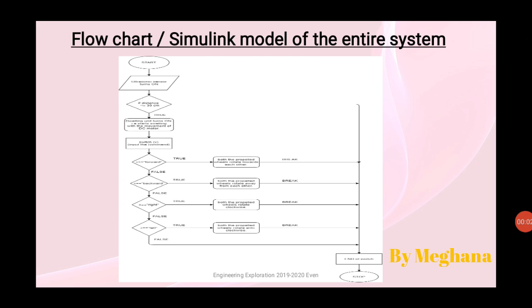Here is the flowchart of our entire system. As soon as the ultrasonic sensor senses the predator which is at a distance of less than or equal to 30 cm, the dwelling unit turns on. That is, it starts to dwell with the movement of the DC motors. The input commands for the locomotion of the wheels: for the forward movement, both propelled wheels rotate towards each other. For backward movement, both propelled wheels rotate away from each other. For the right movement of the wheels, both the wheels rotate in a clockwise direction and for the left movement, both the wheels will rotate in an anticlockwise direction. There is an end switch in the absence of the predator.